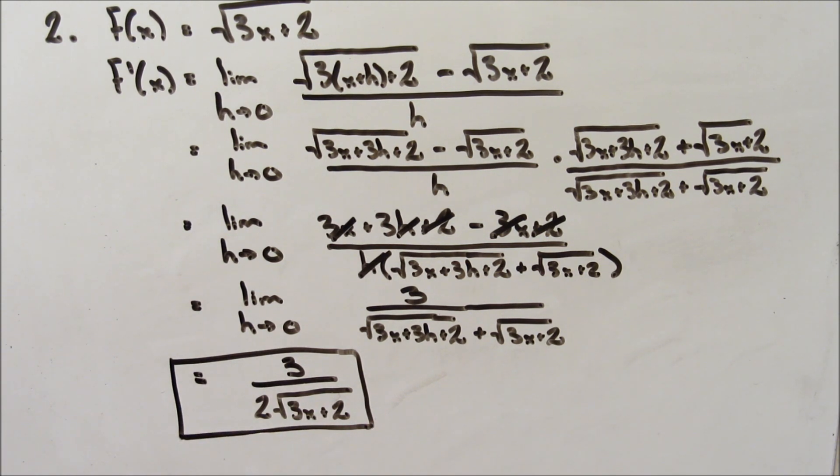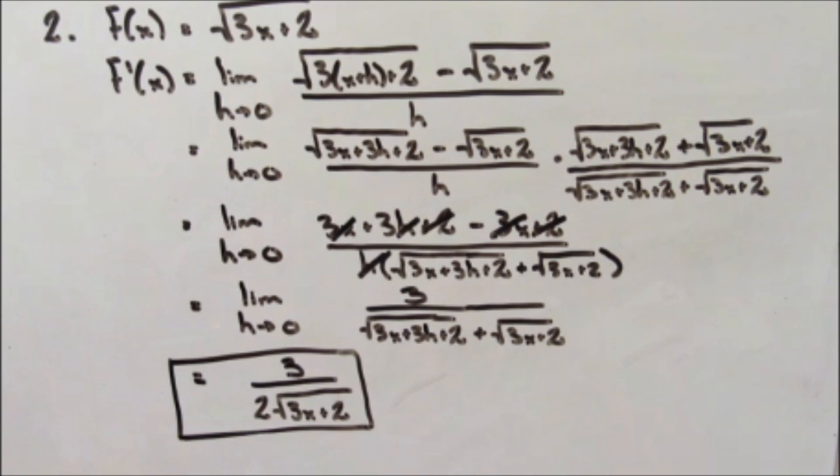Once again, if we want to find the slope of the tangent at any point on the curve, we just substitute in the x-coordinate at that point and it gives us the slope.